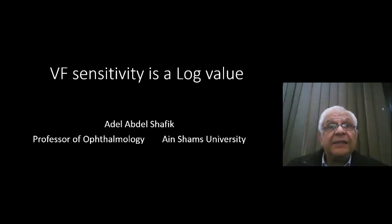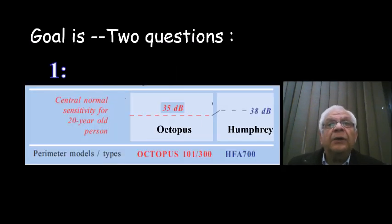Visual field is expressed in log numbers. The goal of this video is to answer two questions. The first is why, when we examine a normal 20-year-old person with the Octopus visual field analyzer, the sensitivity of the central part is 35 decibels, while on Humphrey visual field analyzer it is 38.